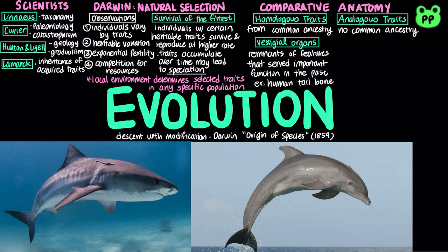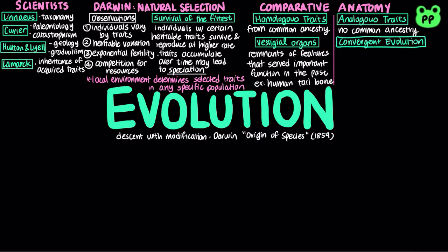However, the two species are distantly related, as dolphin is a mammal while shark is a fish. Convergent evolution is the evolution of analogous traits in distantly related groups.